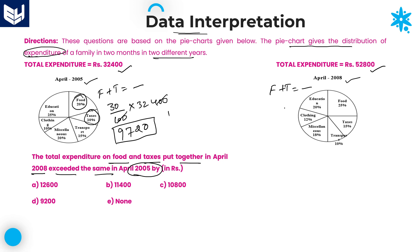Whereas coming to 2008, food and taxes together: 25 plus 15 is 40 percentage. What is 40 percentage of 52,800? That is the total expenditure in 2008. You can cancel the two zeros and multiply 40 and 528.